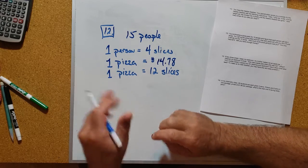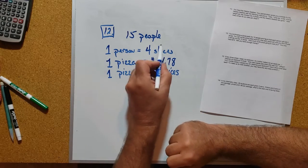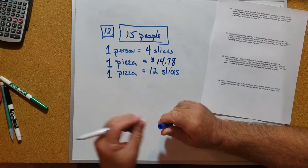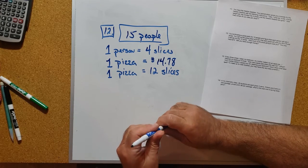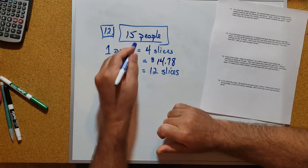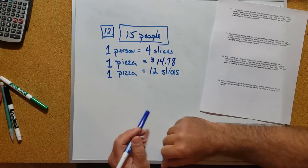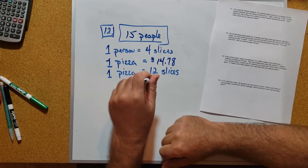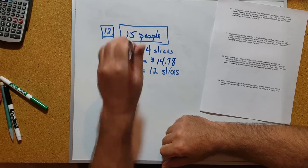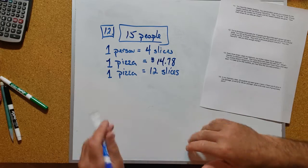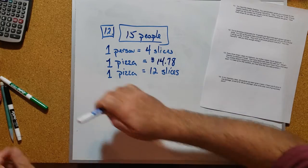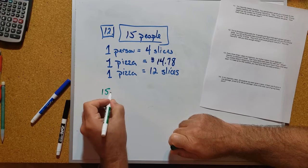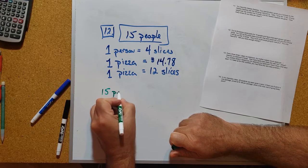If we have to figure out how much this is going to cost, the more people I invite, the more it's going to cost. The fewer people I invite, the less it's going to cost. So the cost of this party is going to depend on the 15 people - that's our starting point. Let's write that down: 15 persons or 15 people.